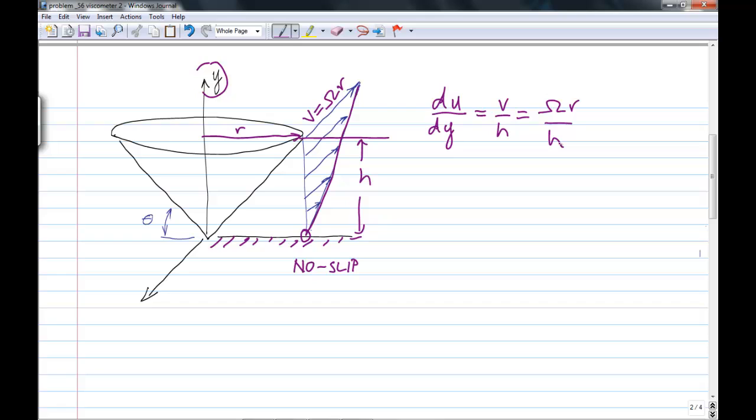But as I say, h varies with radius. So if this is radius, and this is h, and that's theta, then we can get a relationship between h and r by noting that tan theta is equal to opposite over adjacent, so h over r.